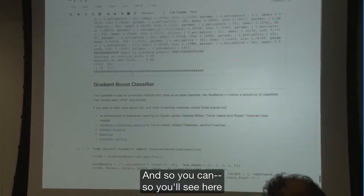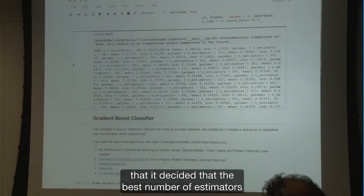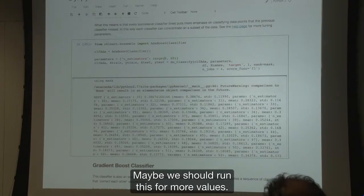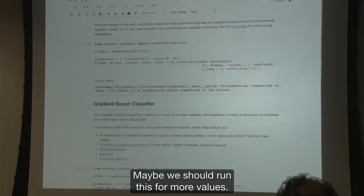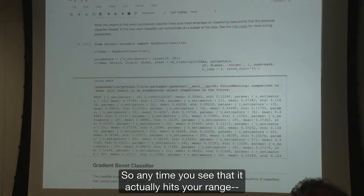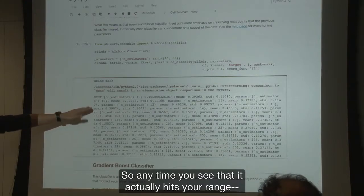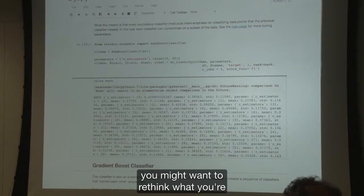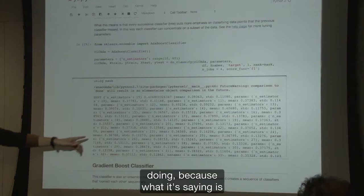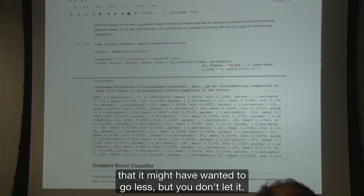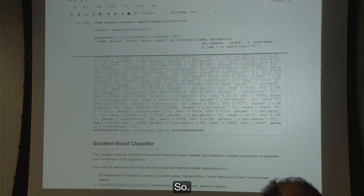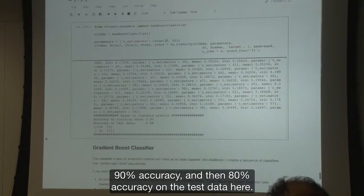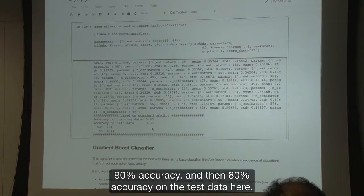So this is how you run an adaptive boost classifier. And so you'll see here that it decided that the best number of estimators is 30, which is actually kind of troubling, because it's at the bottom of our range. Maybe we should run this for more values. Anytime you see that it actually hits the edge of your range, you might want to rethink what you're doing, because what it's saying is that it might have wanted to go less, but you didn't let it. You see here there's 90% accuracy and then 80% accuracy on the test data.